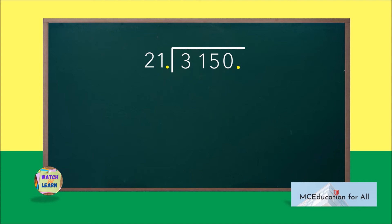Now, divide 3,150 by 21. 3.15 divided by 0.021 is 150.